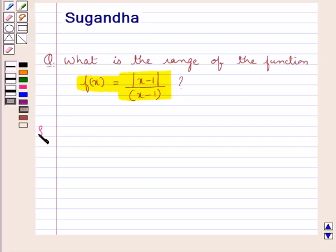Let's proceed with the solution now. We are given a function f(x) = |x-1|/(x-1) and we are supposed to find the range of this function.